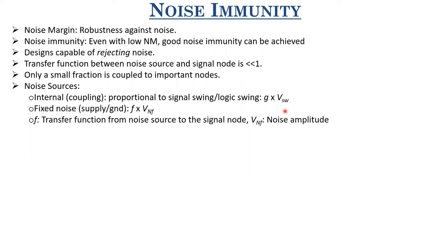The other noise source is fixed noise coming out of the supply rails or ground rails. This fixed noise is modeled as VNF, where VNF is the noise amplitude and F is the transfer function from the noise source to the signal node. If F is very small, then the design is capable of rejecting these fixed noise sources.